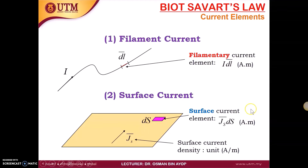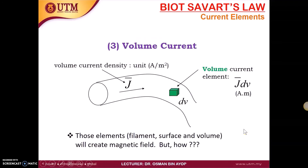Next, we have the volume current. Imagine the volume current density J with a unit of ampere per meter squared, flowing inside a volume dV. We write the volume current element as J·dV, where J is a vector and dV is a scalar representing the volume.